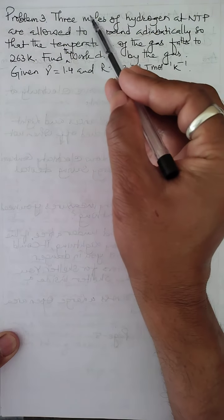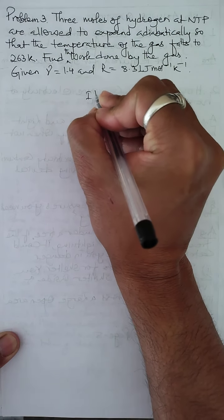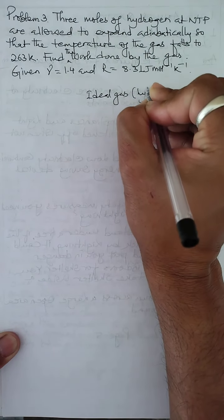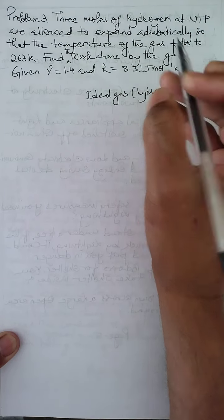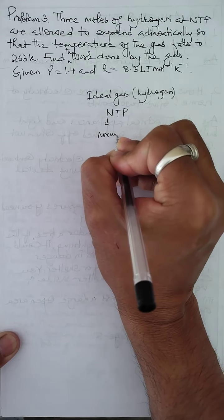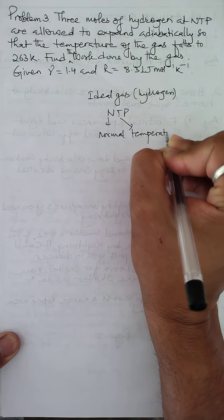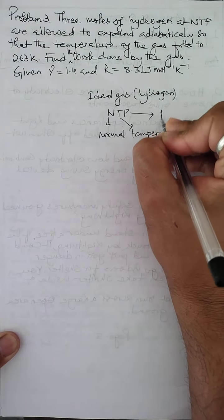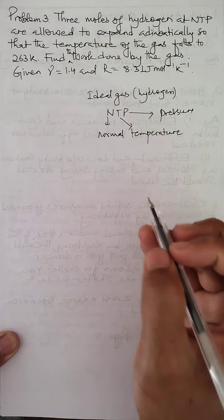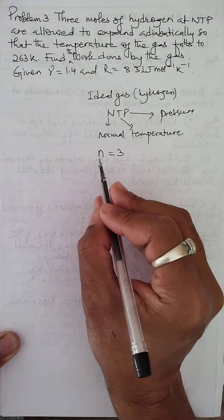The question states that three moles of hydrogen at NTP — NTP stands for Normal Temperature and Pressure — are given. Hydrogen is considered as an ideal gas. The number of moles of the gas is n equals 3.